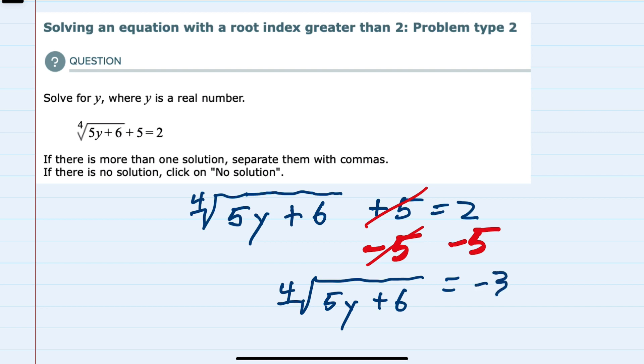And if I were to continue I could remove the fourth root on the left by raising both the left and right hand sides to the fourth power. But in this example we have an even root equal to a negative number.